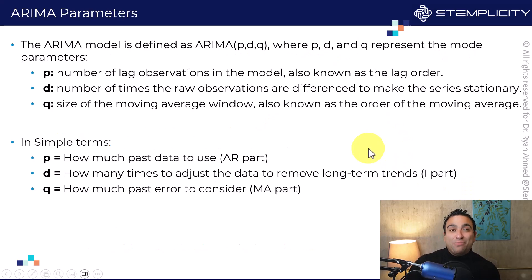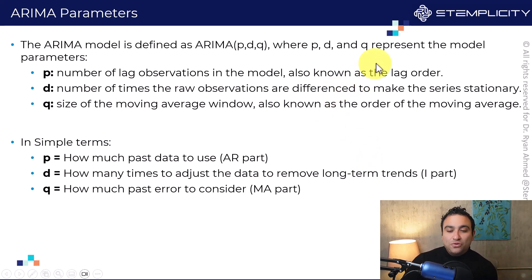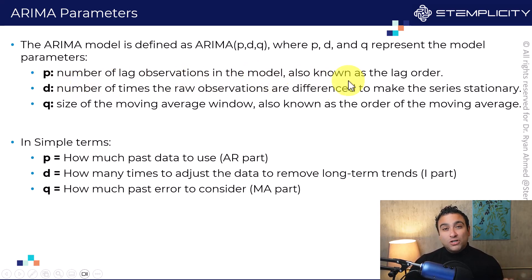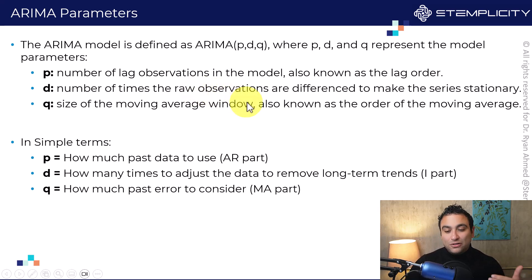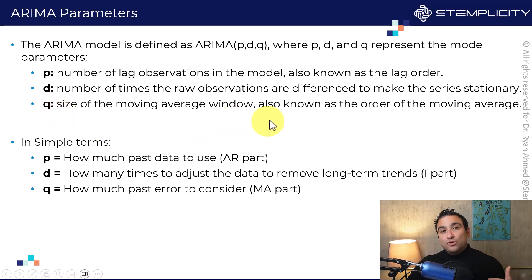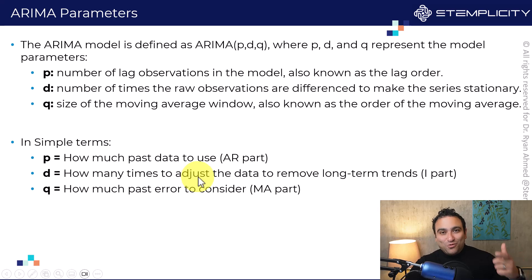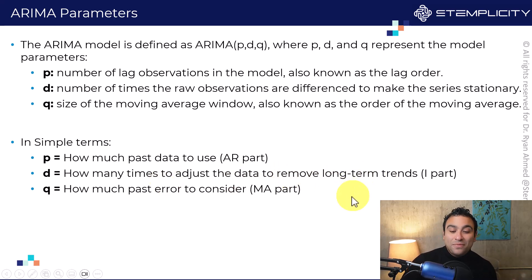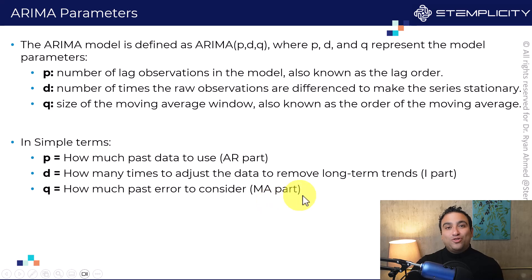Let's summarize the hyperparameters. The ARIMA model is defined as ARIMA(p, d, q), where p, d, and q represent the model parameters. p indicates the number of lag observations in the model, also known as the lag order. d indicates the number of times the raw observations are differenced to make the series stationary. q indicates the size of the moving average window, also known as the order of the moving average. In simple terms: p tells how much past data to use (autoregressive), d tells how many times to adjust the data to remove long-term trends (integrated), and q tells how many past errors to consider (moving average).